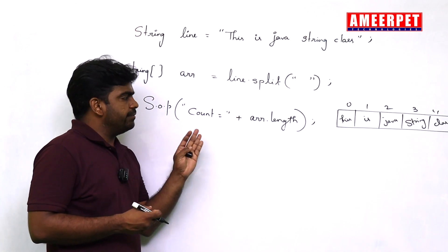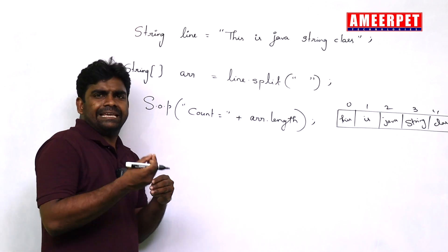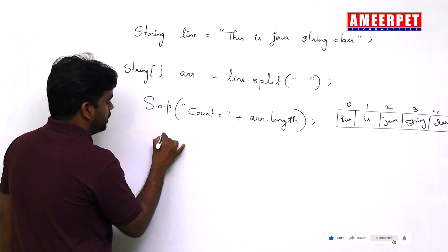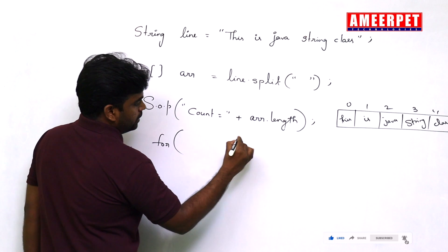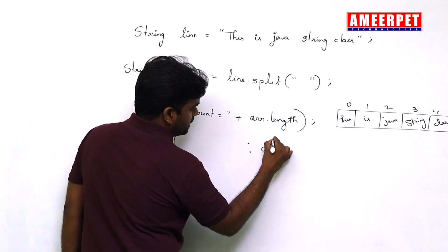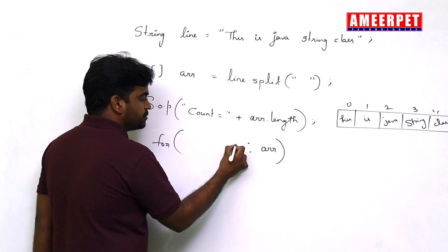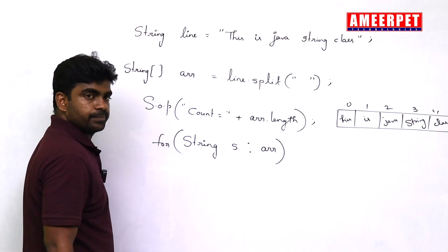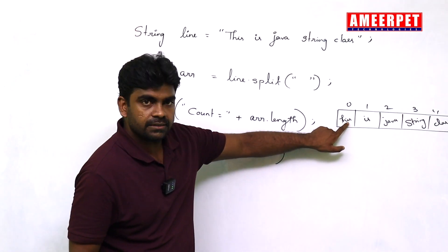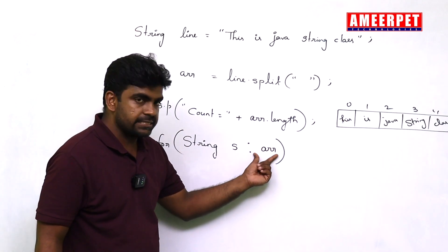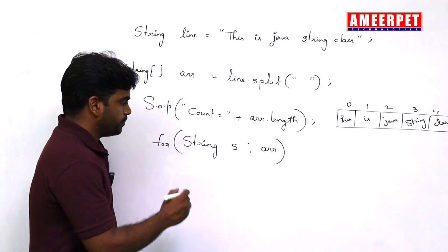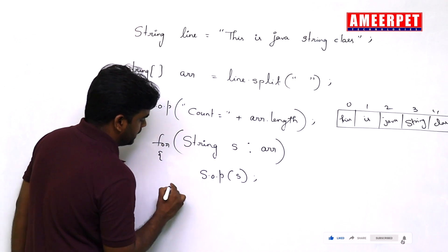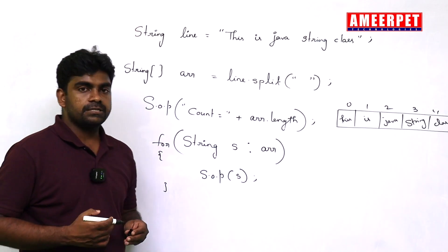Next I just want to display all the words. The easy thing is to use a for-each loop, because it's an array. For each string in the array — for colon array — you collect string by string and print it using System dot out dot println.